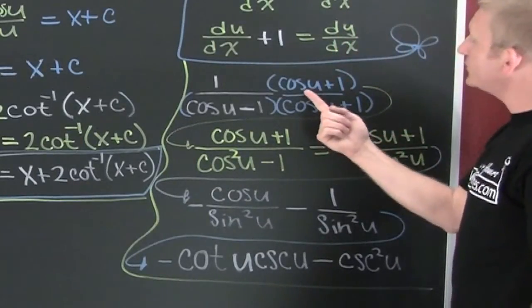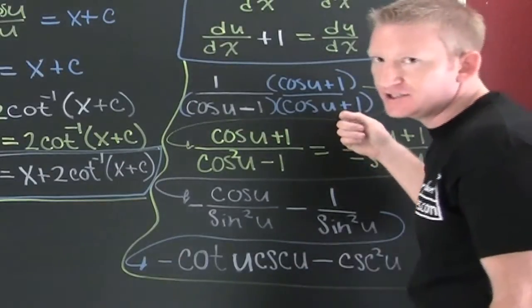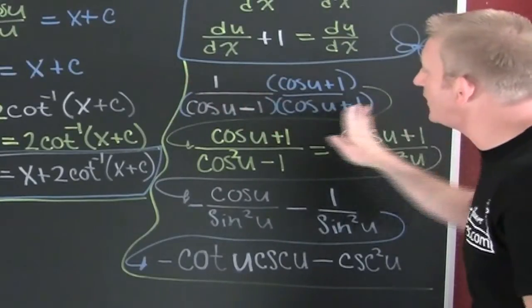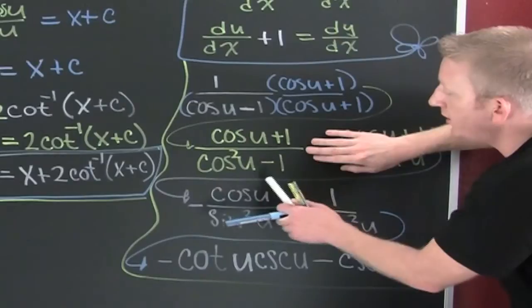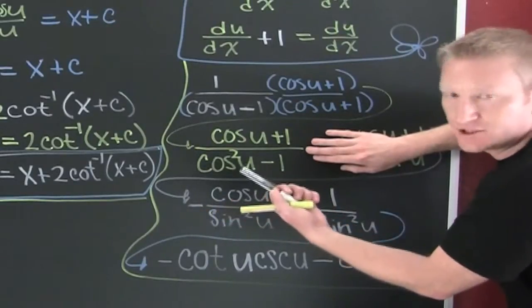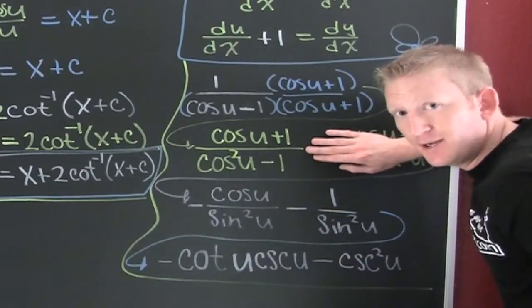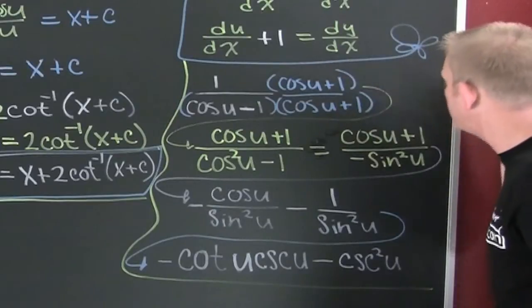The cosine of u plus one. Why did I do that? Because I wanted the conjugate. I multiply those straight across and get the cosine of u plus one over—it's the difference of squares, and that difference of squares is also a Pythagorean identity.